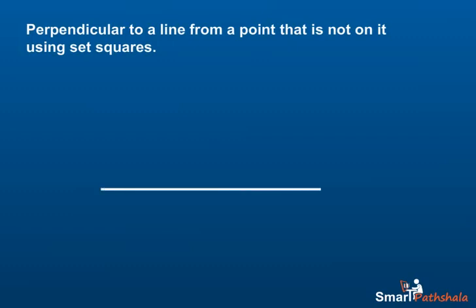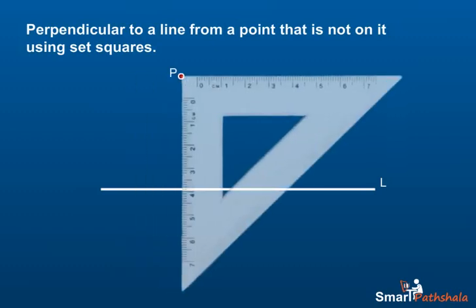Step 1: Let L be the given line and P be a point outside L. Step 2: Place a set square on L such that one arm of its right angle aligns along L.